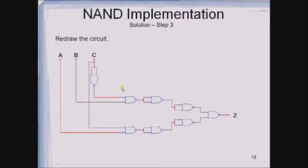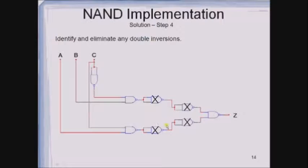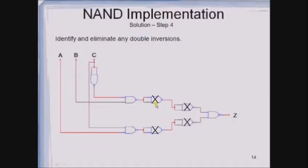Redraw the circuit. The next step is to eliminate the double inverters or double bubbles. Here a NOT gate's output is given as input to one more NOT gate; whatever output you get at the first is the same at the second. Therefore, instead of using these two NOT gates, we eliminate them. Eliminating these two NOT gates decreases the number of gates required in the circuit. In the same way, another pair is also eliminated. Then we redraw the circuit again.